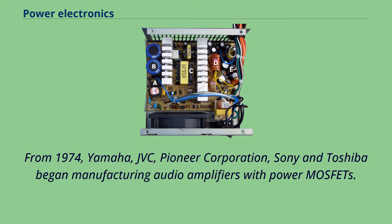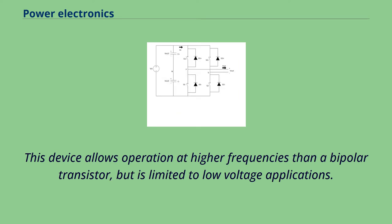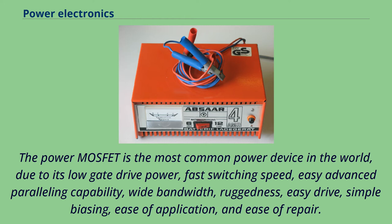From 1974, Yamaha, JVC, Pioneer Corporation, Sony, and Toshiba began manufacturing audio amplifiers with power MOSFETs. International Rectifier introduced a 25 A, 400 V power MOSFET in 1978. This device allows operation at higher frequencies than a bipolar transistor, but is limited to low-voltage applications. The power MOSFET is the most common power device in the world, due to its low gate drive power, fast switching speed, easy parallel capability, wide bandwidth, ruggedness, easy drive, simple biasing, ease of application, and ease of repair.